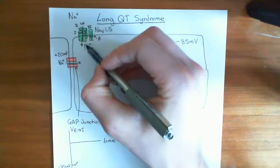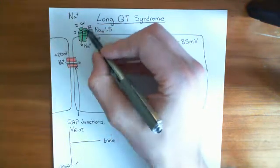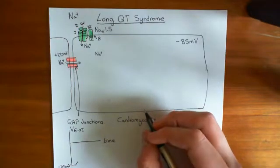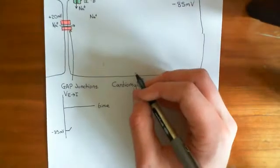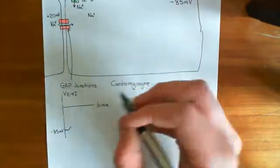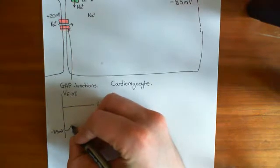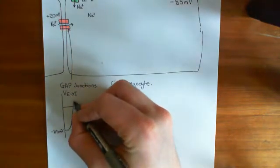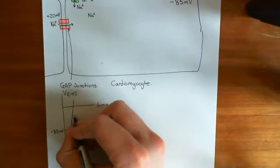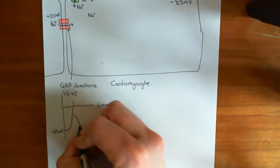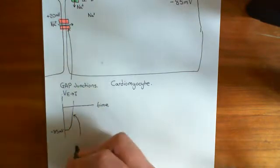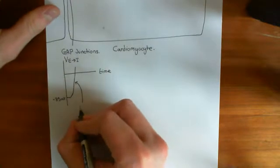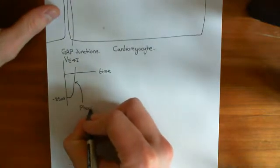Overall, you are moving a positive charge into the cell, and that causes a steep and rapid depolarization of the electrical potential across the cardiomyocyte. This rapid depolarization phase is known as phase zero of the cardiac action potential.